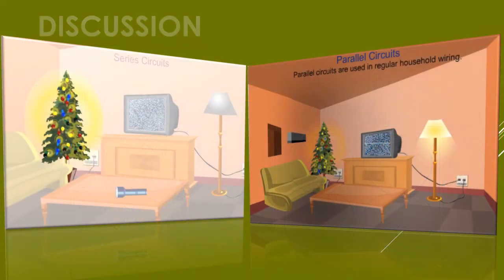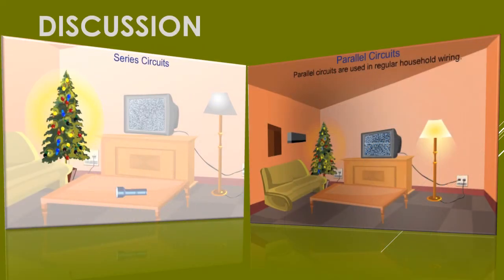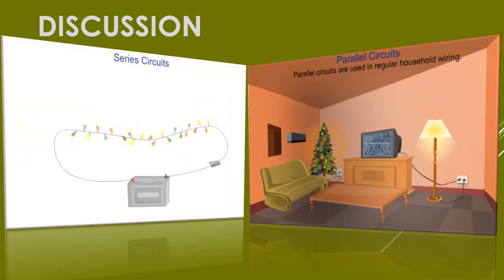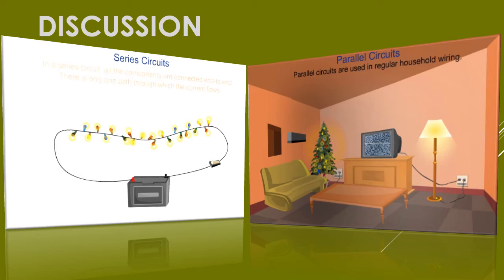After you watch the two videos, compare between series and parallel circuits, then think of a better way to manufacture the three Christmas lights.